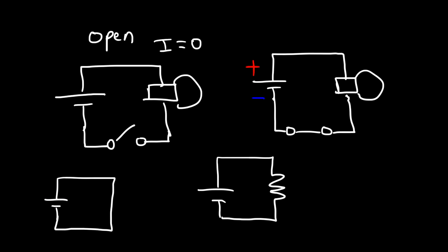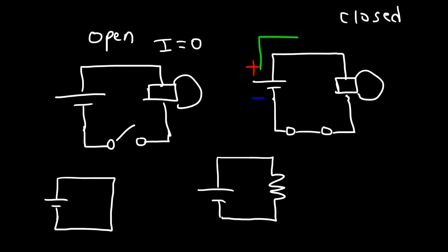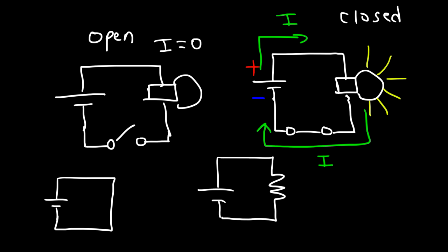On the right, we have a closed circuit. Because the switch is closed, there's a path for the current to flow. So the current is going to flow from the positive terminal, pass through the light bulb, and return back to the battery at the negative terminal. Because the switch is closed, some of the electrical energy will be converted into light energy, so the light bulb is going to be on, if the battery is powerful enough.